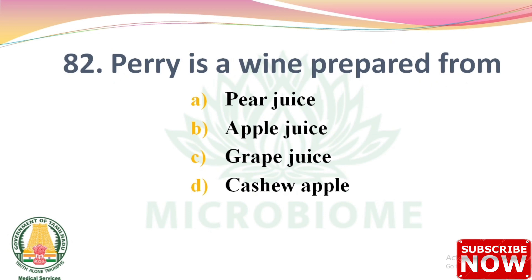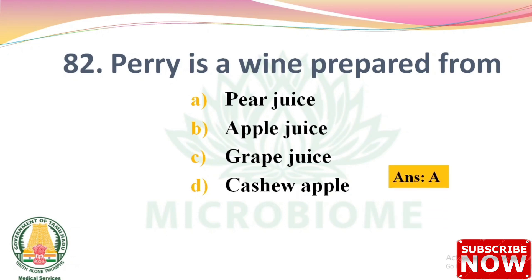Next question: perry is a wine prepared from — options: pure juice, apple juice, grape juice, cashew apple. The right answer is Option A: pure juice.